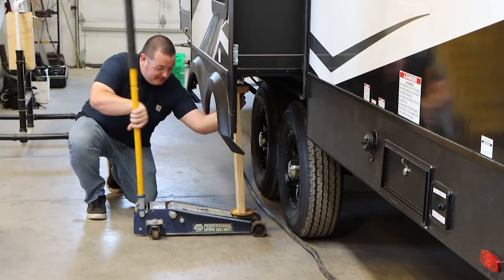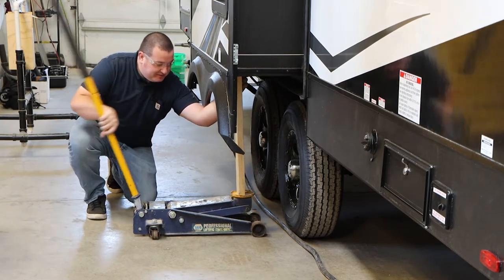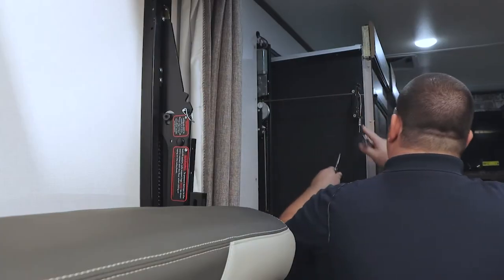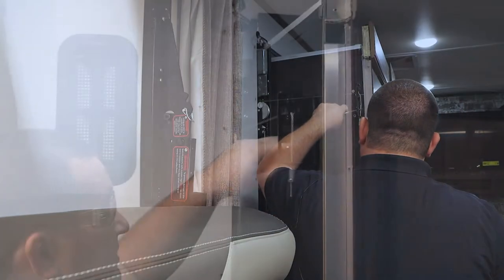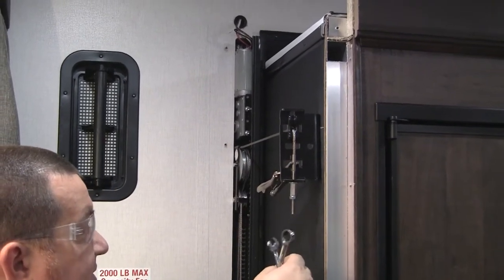At this point you want to support the room with a jack and a 2x4. Next step is we're going to loosen this interior top cable. By doing that I always like to put vise grips on there first to hold it in place.